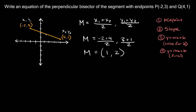We're going to say the midpoint is right here at (1, 2). That's the first step. The second step is finding the slope of this line.